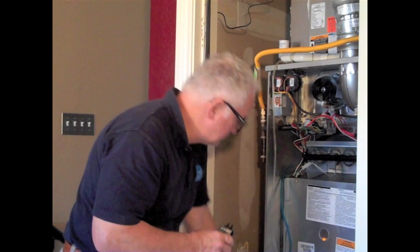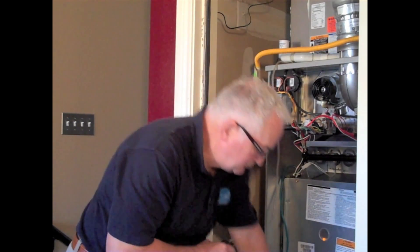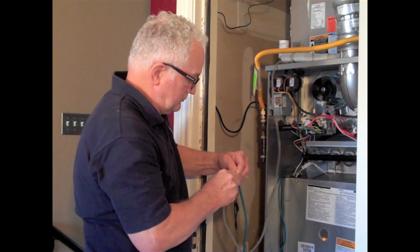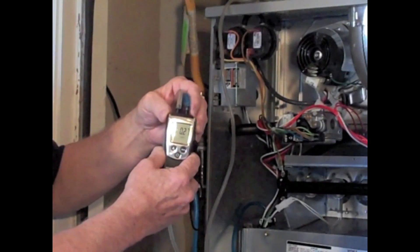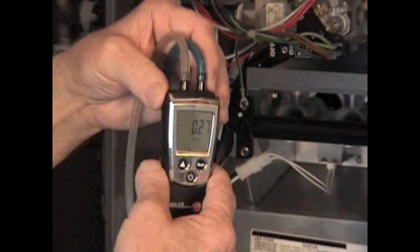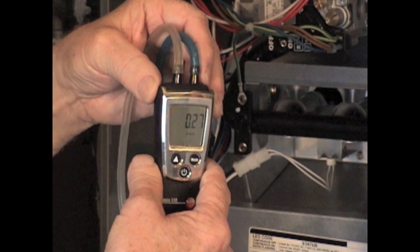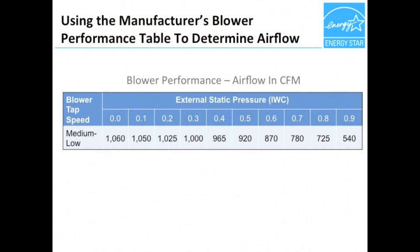Rob has already connected the tubing to the probes and turned on the HVAC system so that the fan is operational. He can now measure the external static pressure by connecting the tubing to the manometer. Here we see the results for the total external static pressure test, with both probes connected to the manometer. The total external static pressure of the system is 0.28 inches water column (IWC). Rob can now determine the airflow of this fan using the blower performance data from the manufacturer. Knowing that the fan was set to the medium-low setting and the measured external static pressure is 0.28 IWC, the airflow is between 1025 and 1000 CFM. By interpolating, we get a final airflow of 1005 CFM.